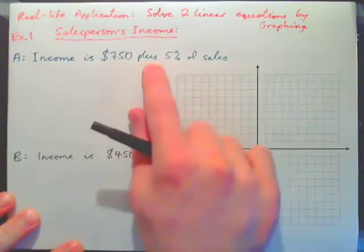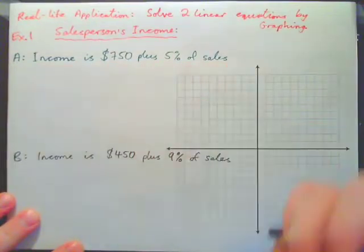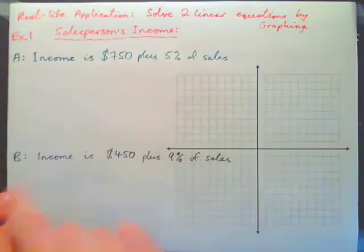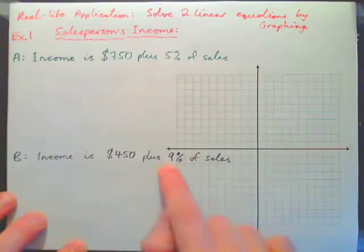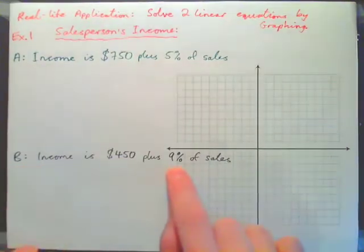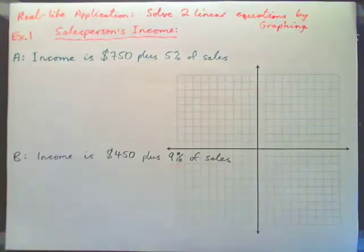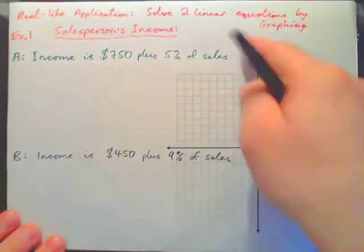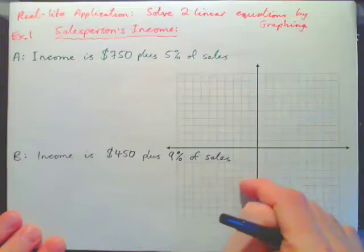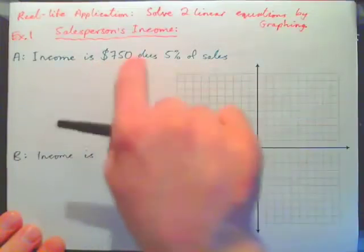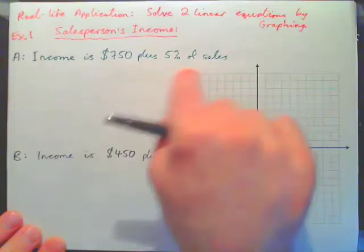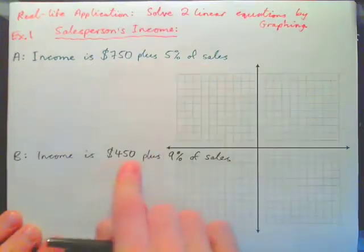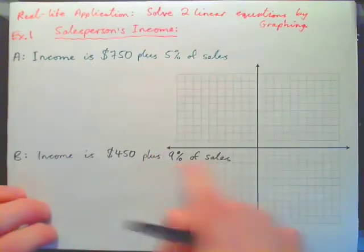So let's take salesperson A, who has an income of $750 plus 5% of sales. And another option is an income of $450 plus 9% of sales. The question is which package is better, this one or this one, which would you pick? Here you can see that you start off at a higher income level but you don't get as much commission, 5%. Here you start off lower but you get a higher commission.